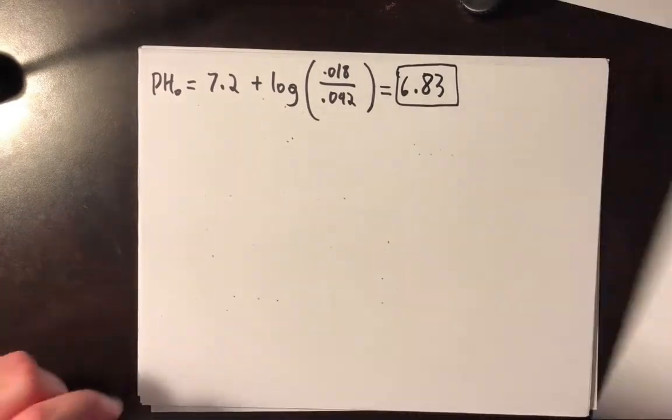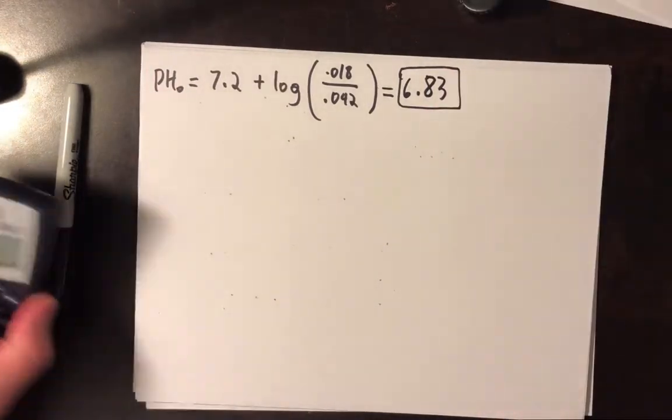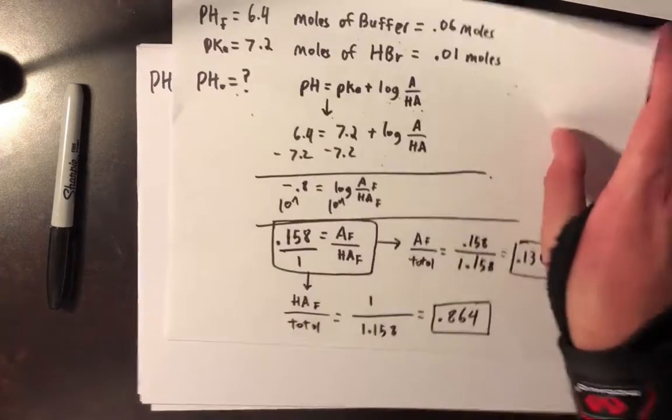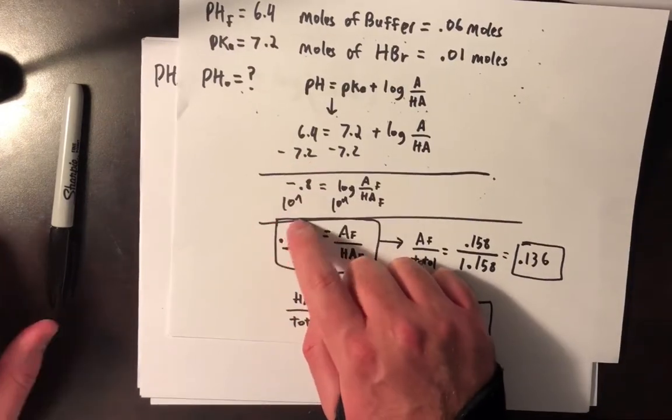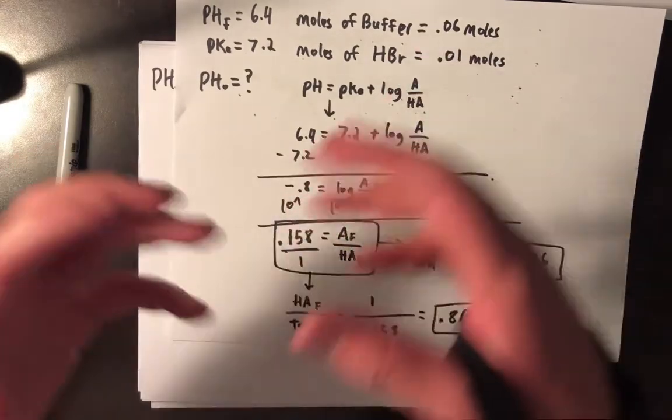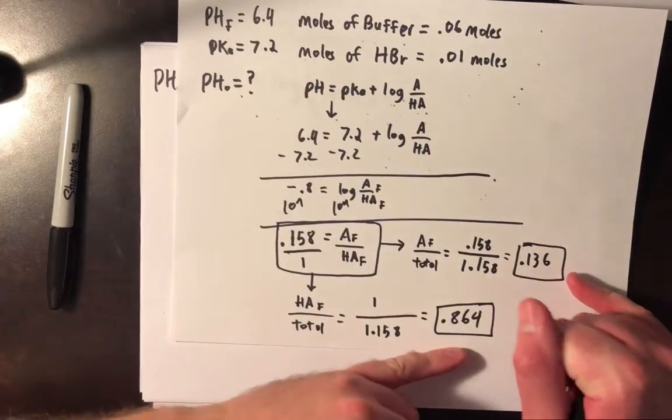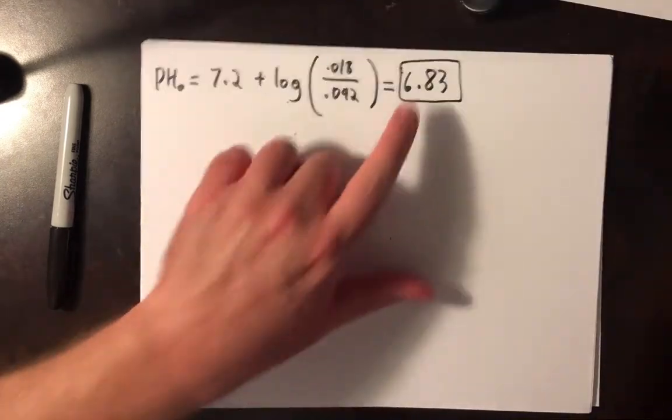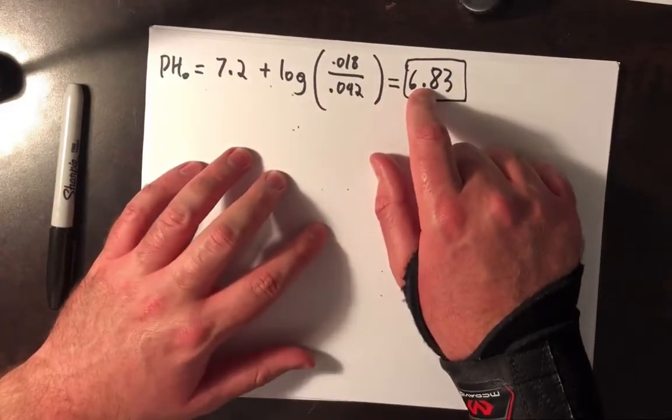Some notes that you may want to notice is that you may get different values. This is because at one point we had an irrational number in our procedure here. This 10 to the negative 0.8 here is an irrational number. And so different calculators have different internal rounding consistencies with them. And so we did a lot of rounding in this plot. So you may get a different answer than 6.83, but it should be somewhere around that approximated value.